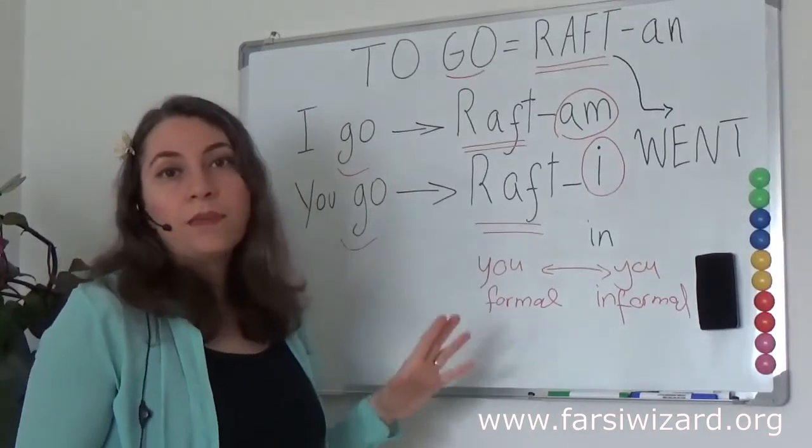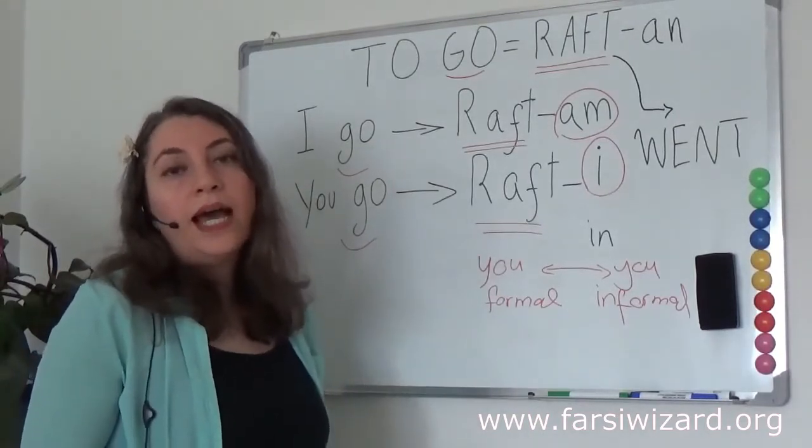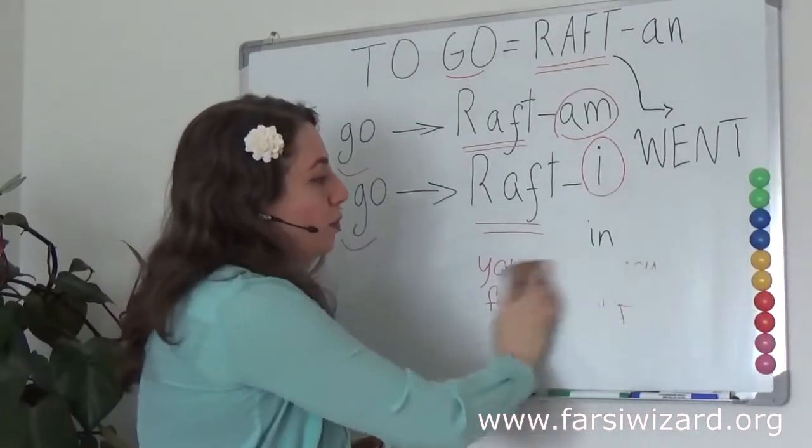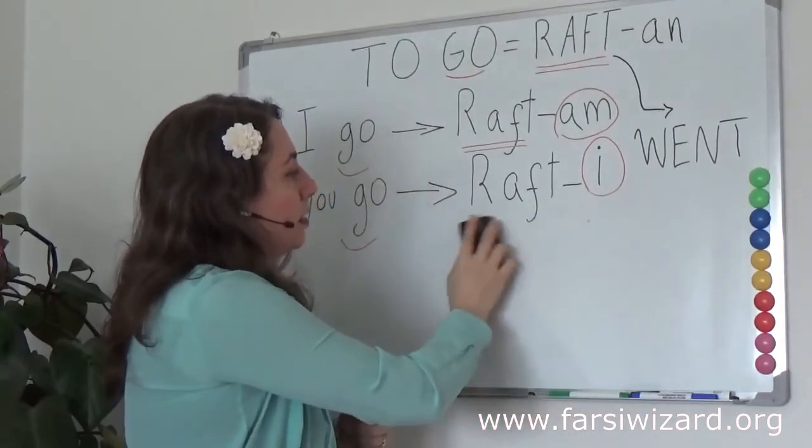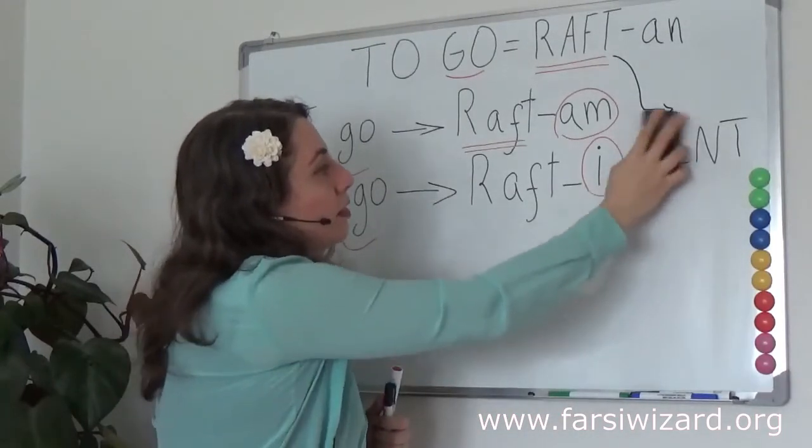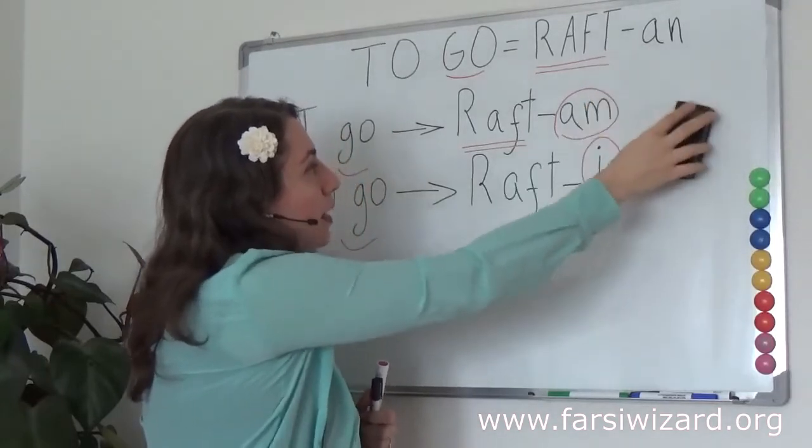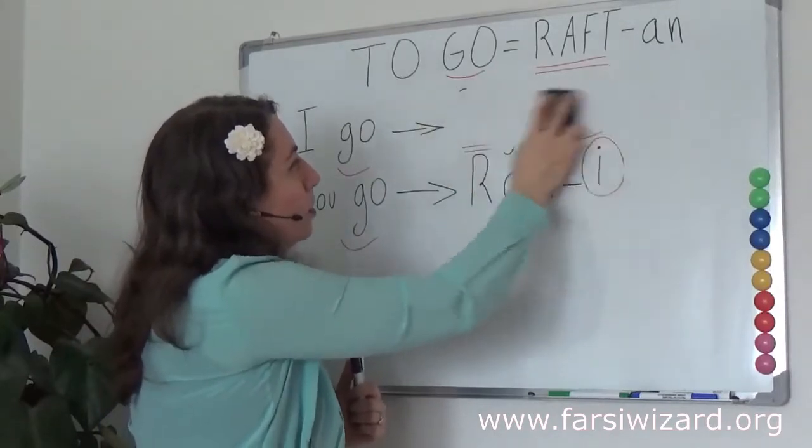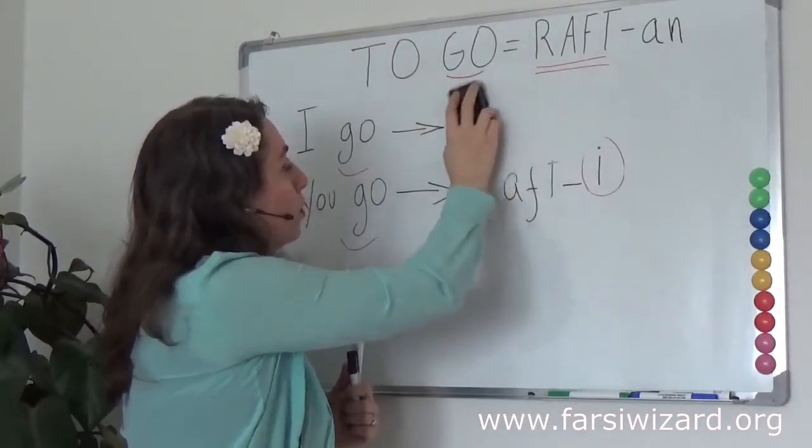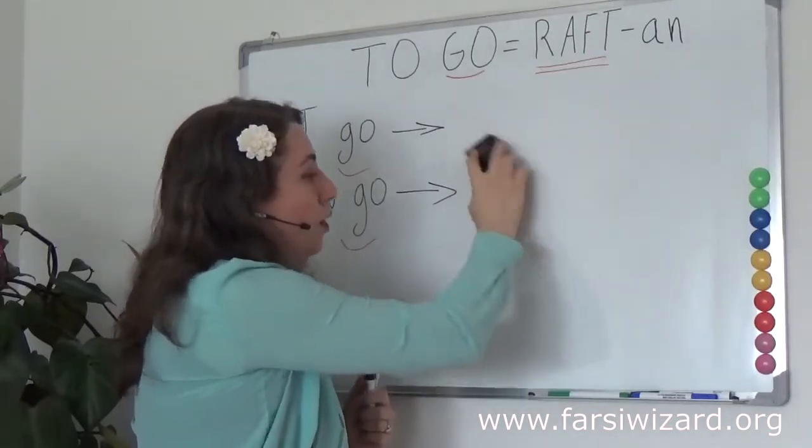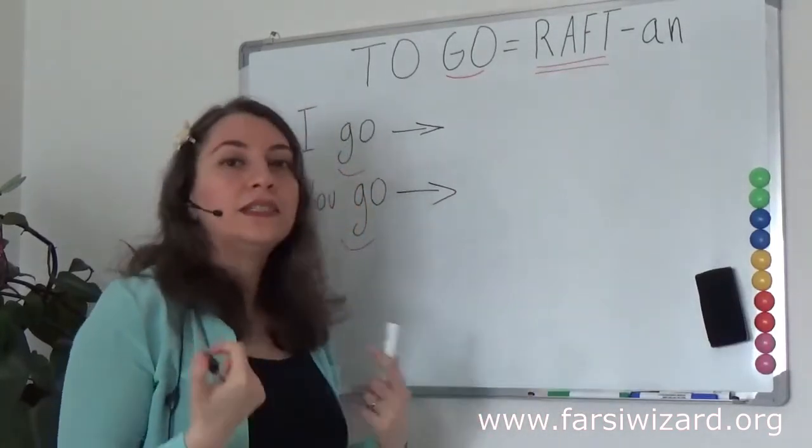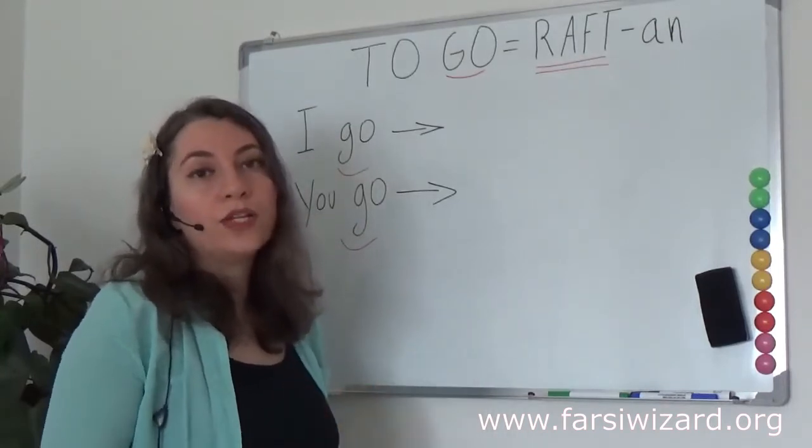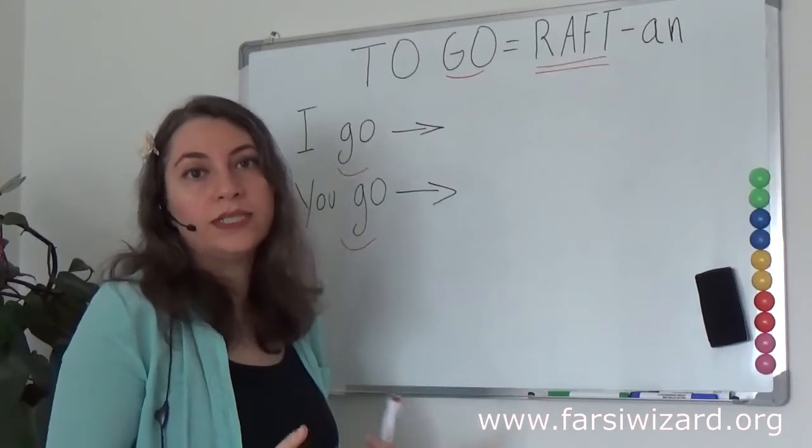This is about past tense verb simple past. How do we make simple present? Basically in Farsi, the present tense verb has nothing to do with the infinitive. So if you look at 'raftan' you cannot really figure out what would be I go or you go. How do we figure out the present tense? The answer is simply memorization because there is no logical process through which you can conclude what is the present tense.